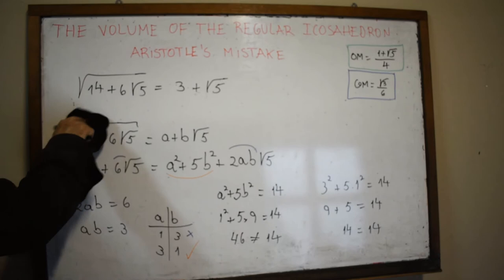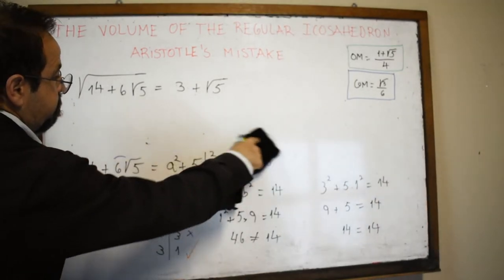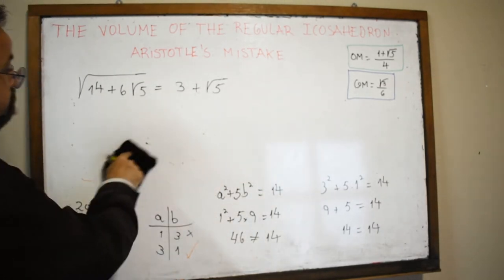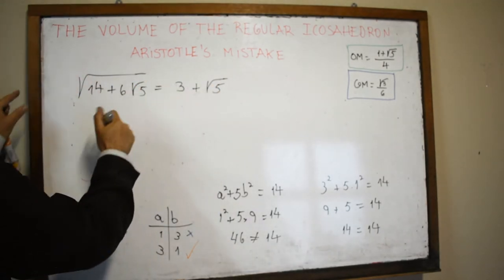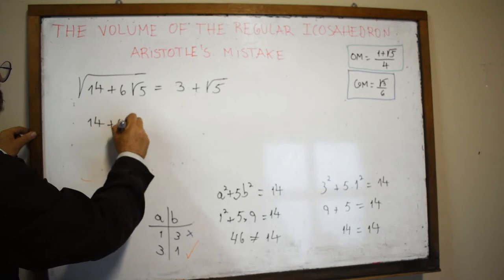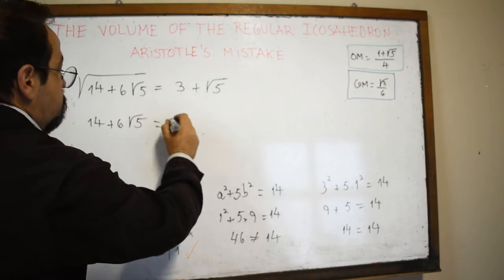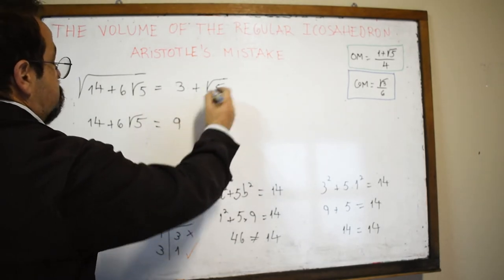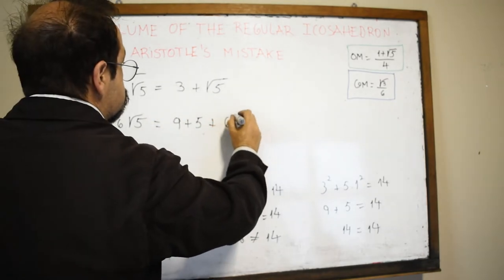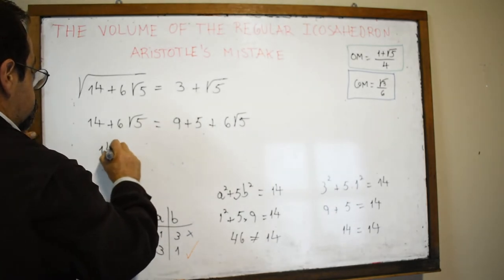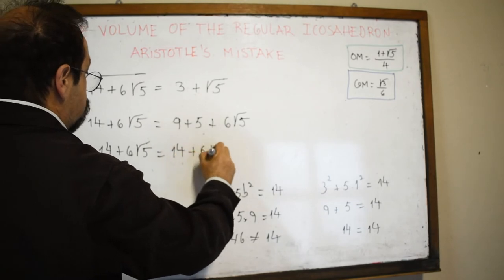A little unbelievable. Let's verify: squaring the left side gives 14 + 6√5. Squaring the right side: 3² = 9, (√5)² = 5, and 2 × 3 × √5 = 6√5, giving 9 + 5 + 6√5 = 14 + 6√5. So fourteen plus six root five equals fourteen plus six root five.